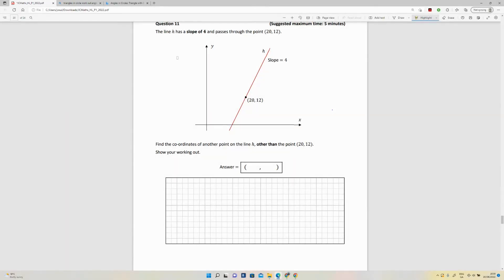Okay, question 11. The line h, this red line here, has a slope of 4 and passes through the point 20 comma 12. Find the coordinates of another point on the line h other than the point 20, 12. Show your working out.